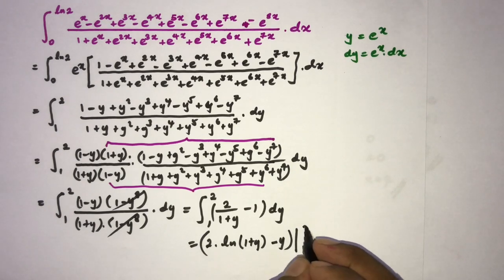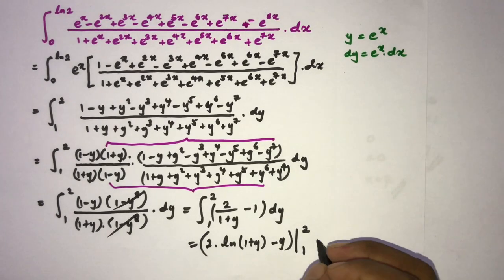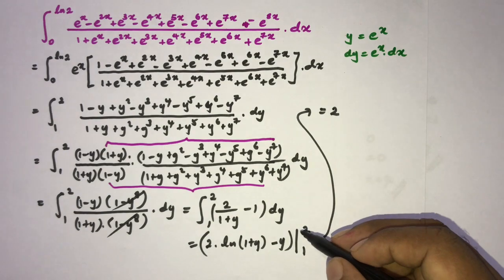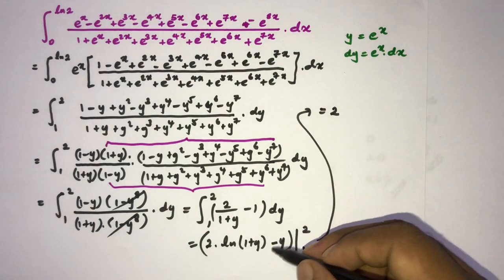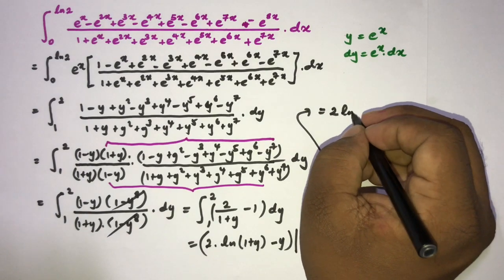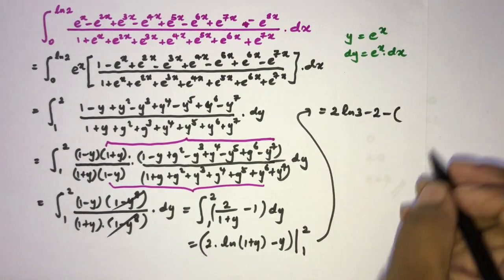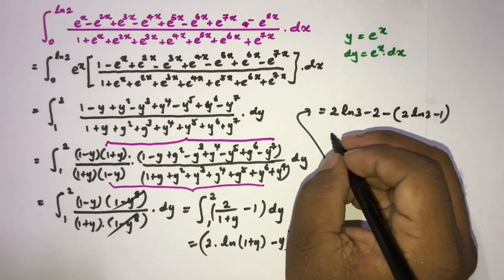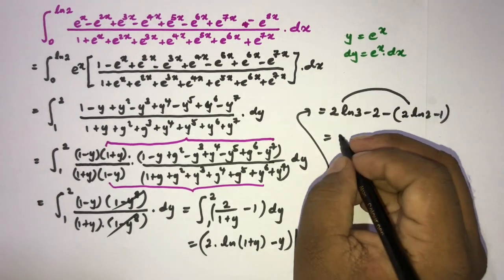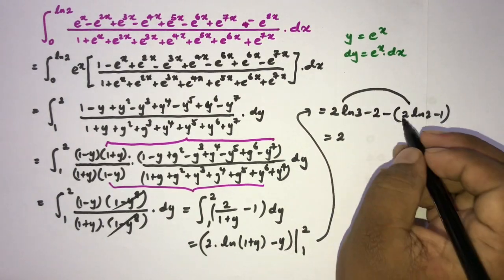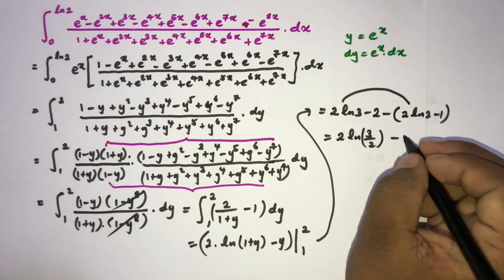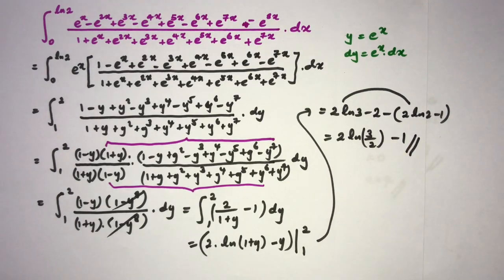Plugging in the limits: at y equals 2, we get 2 times natural log of 3 minus 2; at y equals 1, we get 2 times natural log of 2 minus 1. So the answer is 2 times (natural log of 3 minus natural log of 2) minus 1, which by the log property equals 2 times natural log of (3/2) minus 1. If you like this video, please subscribe to the channel. Thank you for watching.